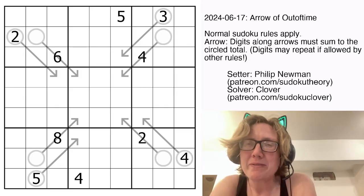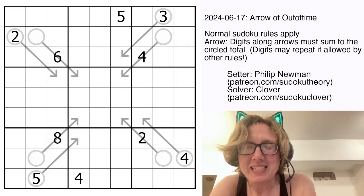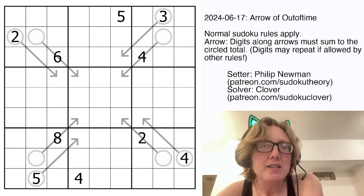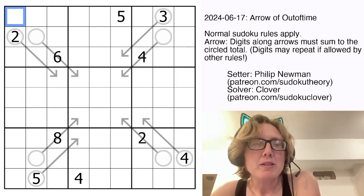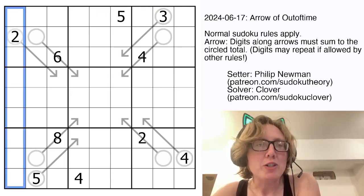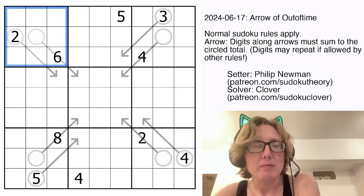This is called Arrow of Out of Time. It was originally posted in gas on June 17th, 2024, and it is an Arrow Sudoku. In Arrow Sudoku, we have standard Sudoku rules, placing the digits 1 through 9 once each in each row, each column, and each outlined 3x3 region.